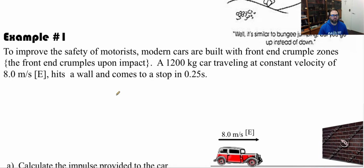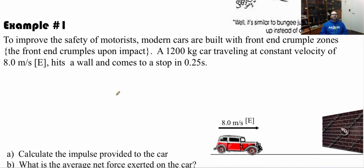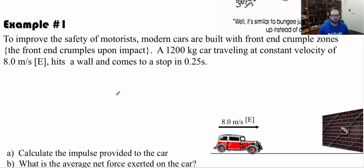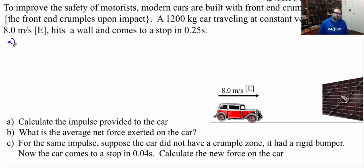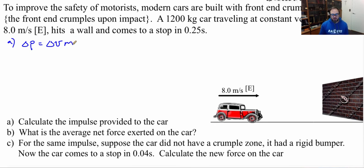Now let's take a look at our first example. Modern cars are built with a crumple zone, where the front end crumples upon impact. A 1200 kilogram car traveling at a constant velocity of 8 meters per second east hits a wall and comes to a stop in 0.25 seconds. Part A asks us to calculate the impulse provided by the car. Impulse is just change in momentum. Since mass doesn't change, what must change is velocity. So change in momentum equals mass times change in velocity.